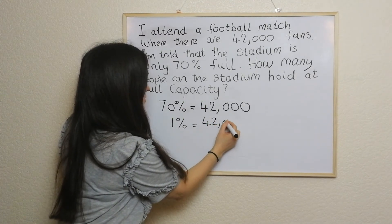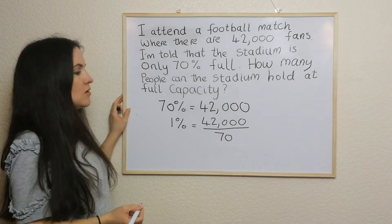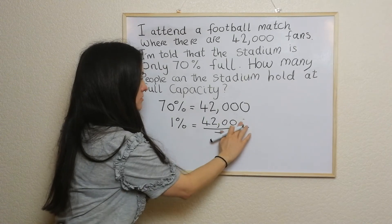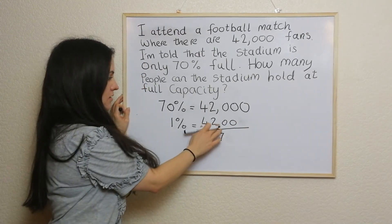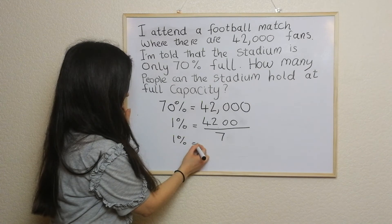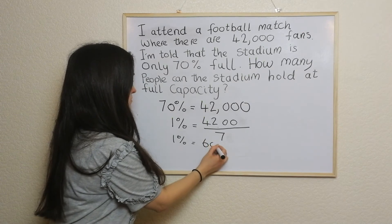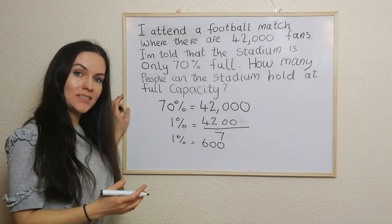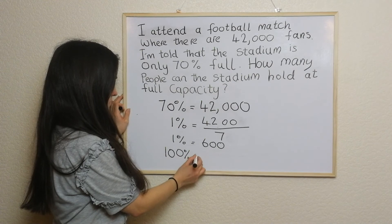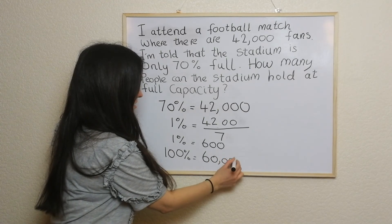To get 1%, I divide through by 70. So we have 42,000 divided by 70. I notice that both numbers divide by 10, so I'll cancel a zero from each. Then I think: how many 7s go into 42? Six. So these cancel out and I'm left with 600. So 1% is 600. To get 100%, I times 600 by 100 and I get 60,000.